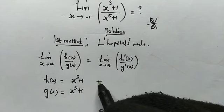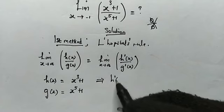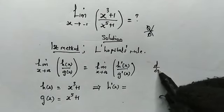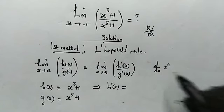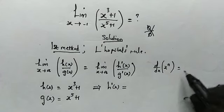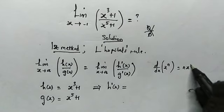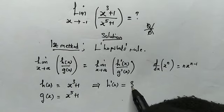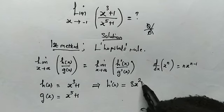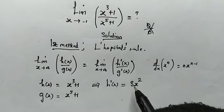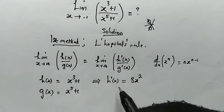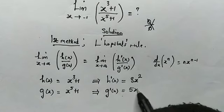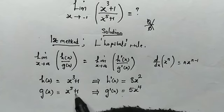Now to find the derivatives. Recall the power rule: the derivative with respect to x of x to the power of n equals n times x to the power of n minus 1. Applying this, h prime of x: the derivative of x cubed gives 3x squared, and the derivative of the constant is 0, so h prime of x equals 3x squared. For g prime of x, the derivative of x to the power of 5 gives 5x to the power of 4, so g prime of x equals 5x to the power of 4.